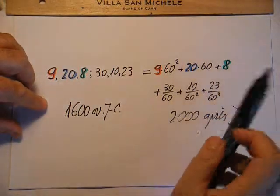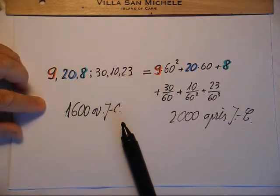C'est ça l'écriture en base 60. Avec cette clé, vous pouvez traduire en écriture de nos jours le problème babylonien.